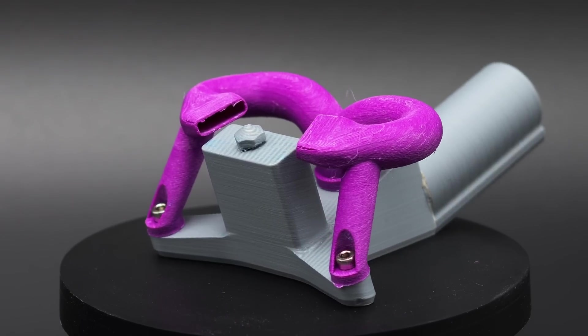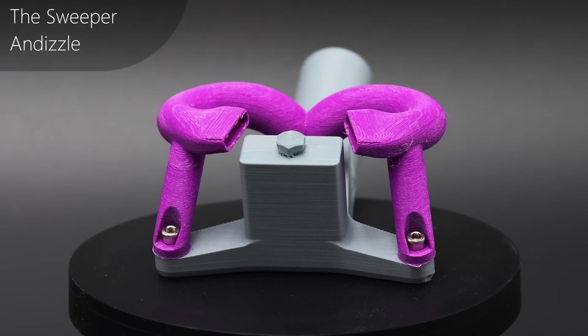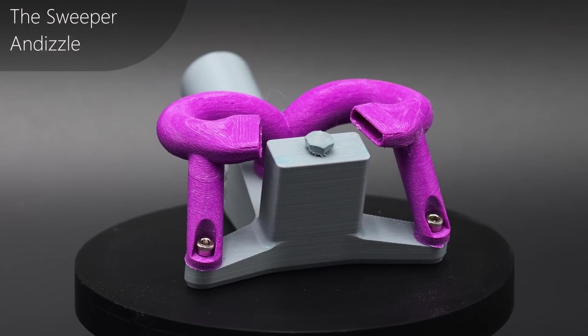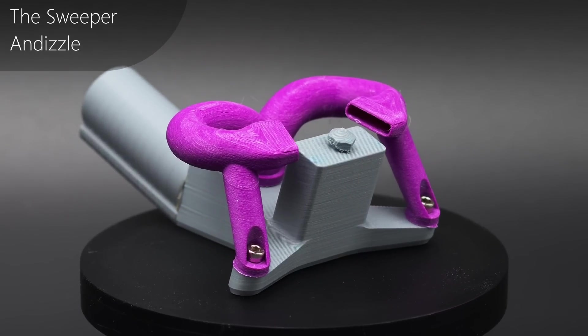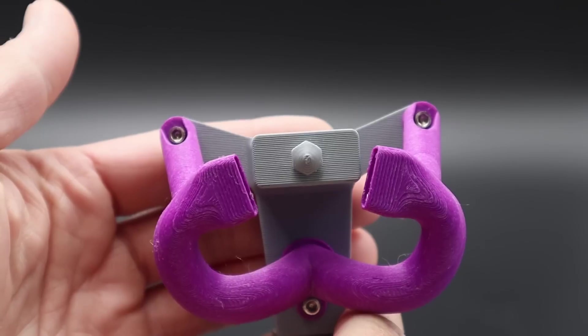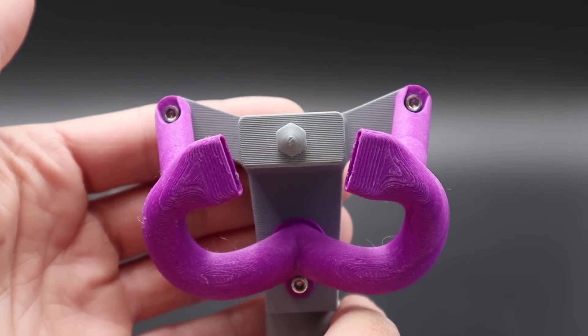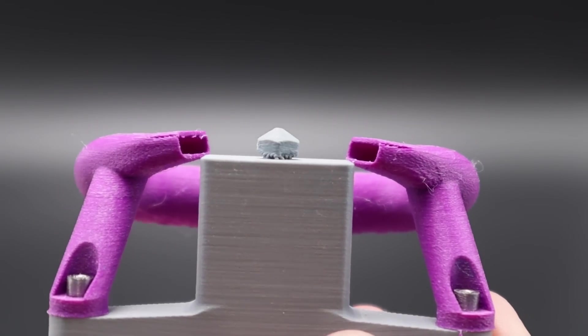And next we have the Sweeper by Ann Dizzle. This one looks pretty simple but I think there is way more to it. It has a double opposing type of design but they're not directly opposite to each other and each mouth is quite close to the nozzle and it's sending air nearly horizontally.